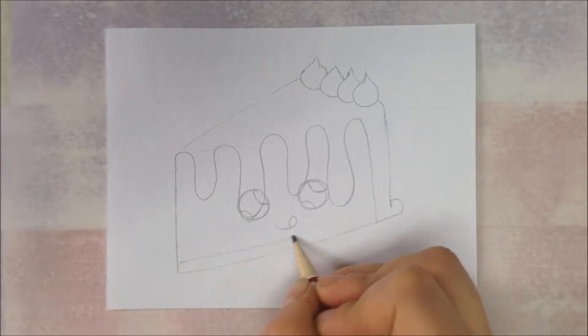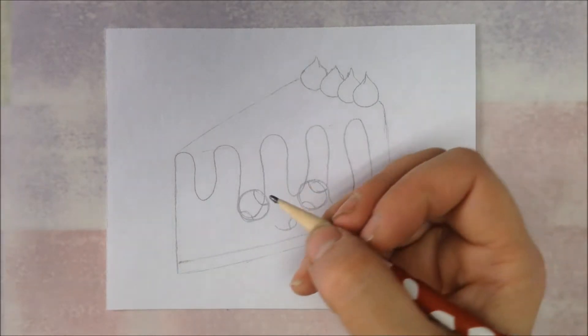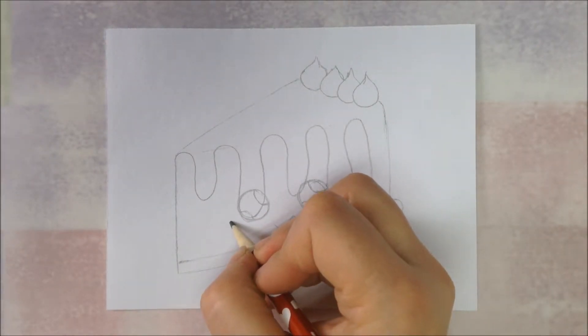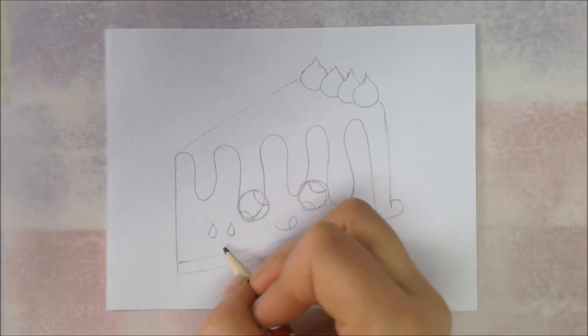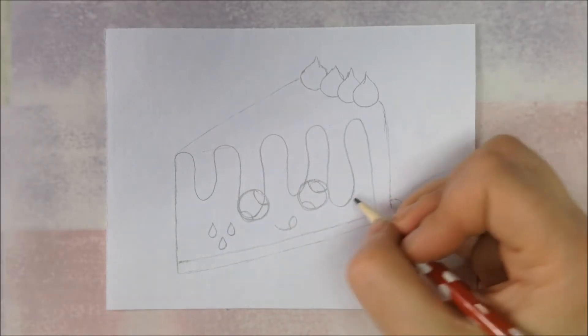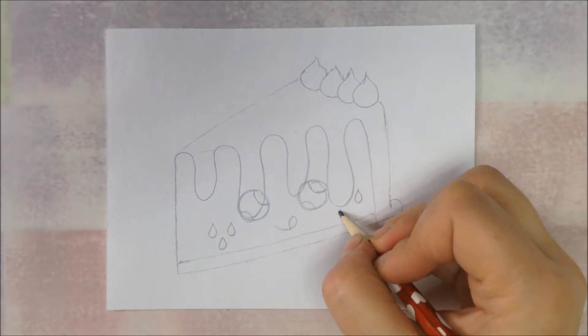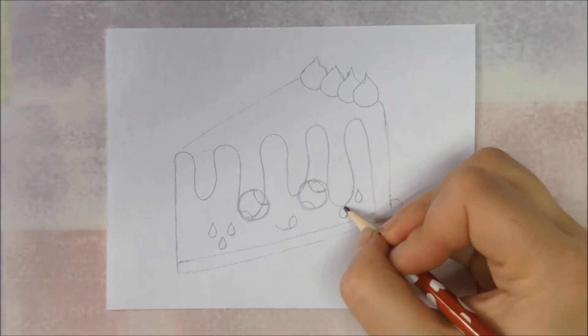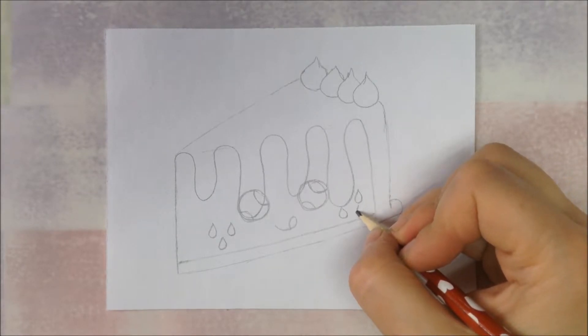And to turn it into a watermelon, we're going to put a line on the bottom. This is going to be the rind part. And then we're going to add some seeds. Little teardrop shapes. Add as many as you want. I've got three on that side for the, kind of where the cheek would be. And then on this one, I'm going to put a couple more. And I've got just enough room to add a third one.